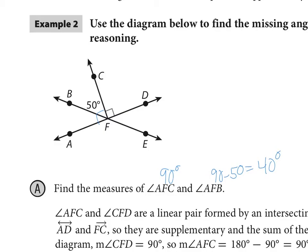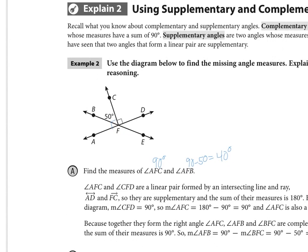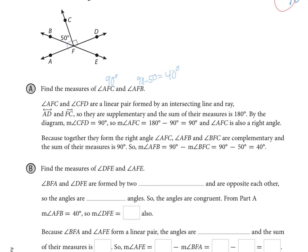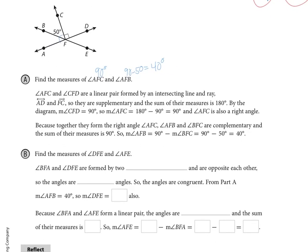In part B we're being asked to find the measures of DFE and AFE. What we know is that BFA and DFE, this angle here and this angle here, are formed by two intersecting lines and those angles are opposite each other so they are vertical angles. The angles are congruent. We've proved that a couple of different ways. If the angles are congruent and we just found that AFB was 40 degrees, then DFE is also 40 degrees.